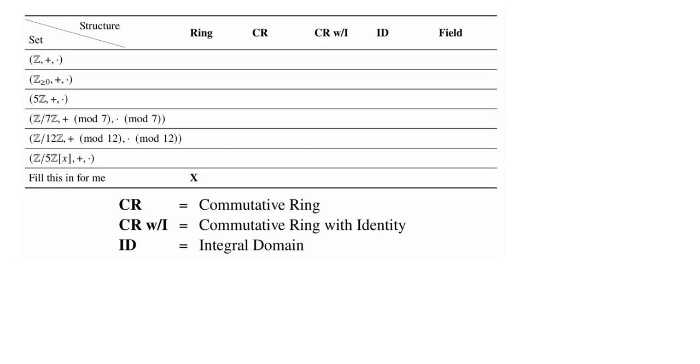Welcome back, everybody. This is our video solution to problem 5 from SuperQuiz 3. The structure of this problem is a little bit different. I've given a table and a bunch of examples on the left - these are sets along with a multiplication and an addition. We want to identify how much structure we have in terms of the spectrum from ring up to field.